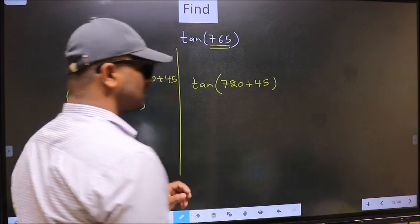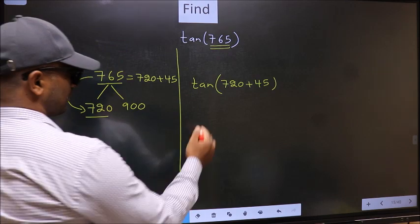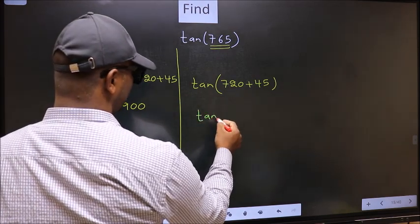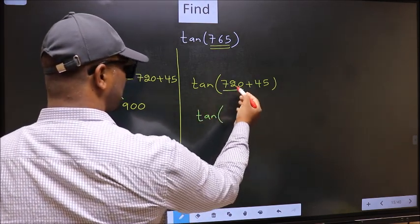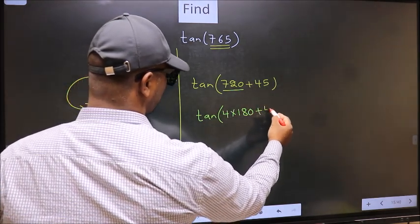This is your step one. Next, tan - in place of 720 now we write 4 times 180 plus 45.